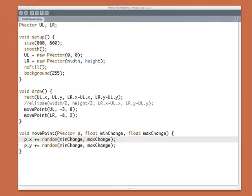Here's a very minor variation on the last sketch. All I've done is add two new arguments to move point, the minimum and maximum amount by which I want the points to change. Let's run this.